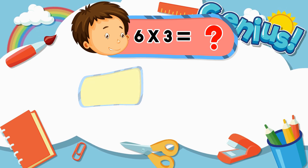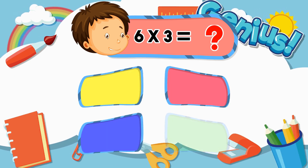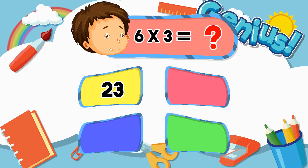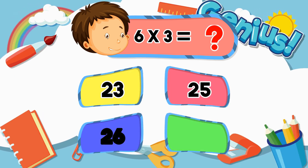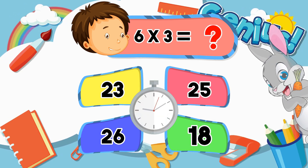What is 6 times 3? 23, 25, 26. Answer: 18.